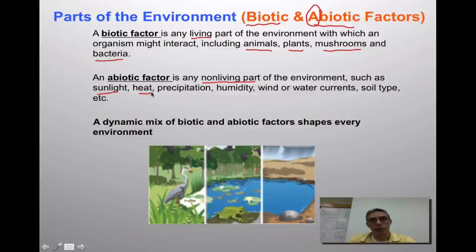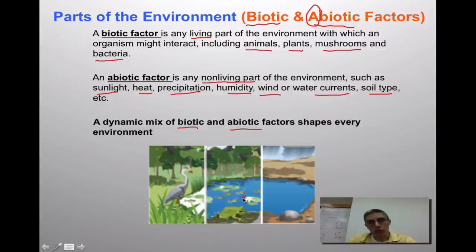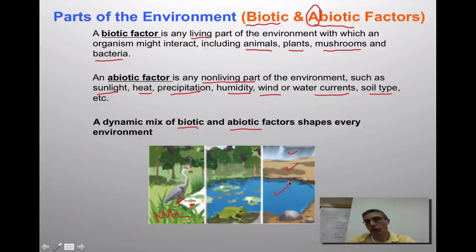Abiotic factors include things like sunlight, heat, precipitation, humidity, wind or water currents, and soil type — there are lots of other examples as well. In order to have a really successful ecological environment, you need a mix of the two — both biotic and abiotic factors. In the picture shown here, the plants, the heron, and the fish in the pond are all biotic factors, while the water, the soil, and the precipitation are abiotic factors. Put those together and that would be the complete environment.